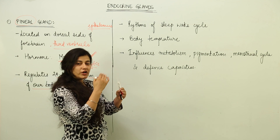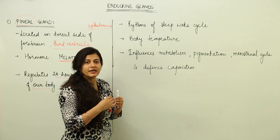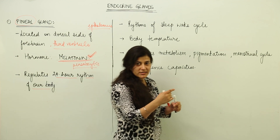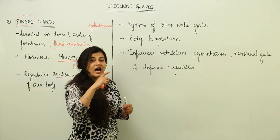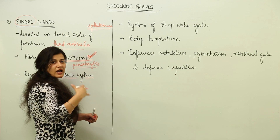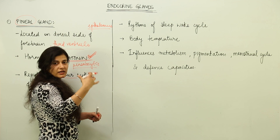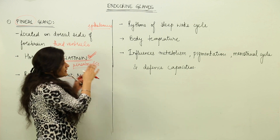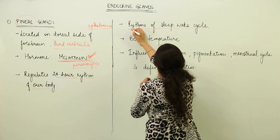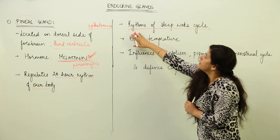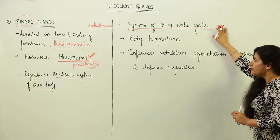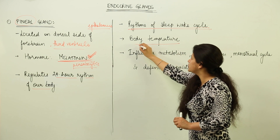In females, there is a menstrual cycle that tracks 28 days. The body knows when 28 days have been completed through the secretion of melatonin, which keeps track of days and the sleep-wake cycle. Melatonin is responsible for maintaining the rhythm of the sleep-wake cycle of the body.